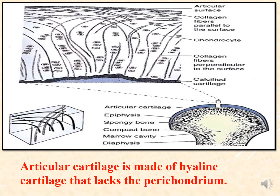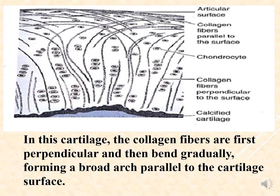Articular cartilage is found on the head of bones and is made of hyaline cartilage, but it lacks the perichondrium. The arrangement of articular cartilage differs from regular hyaline cartilage: the collagen fibers are first perpendicular to the surface.